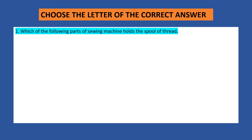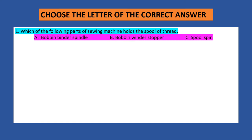Choose the letter of the correct answer. Question number 1: Which of the following parts of the sewing machine holds the spool of thread? A. Bobbin binder spindle. B. Bobbin binder stopper. C. Spool pin. The answer is letter C — spool pin.